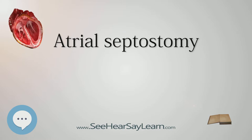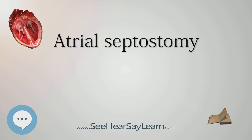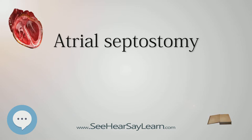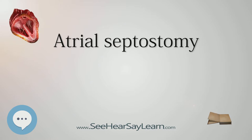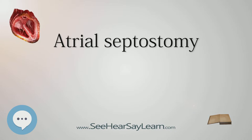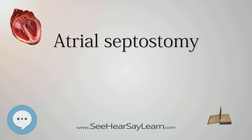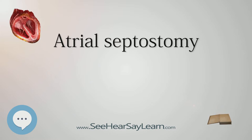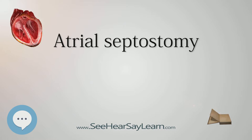The majority of atrial septostomies are performed on infants with DTGA or other cyanotic heart defects. A balloon catheter is guided through a large vein into the right atrium during cardiac catheterization. The catheter is threaded into the foramen ovale, a naturally existing hole between the atria that normally closes shortly after birth. The balloon is inflated to enlarge the foramen ovale enough that it will no longer become sealed, allowing more oxygenated blood to enter the right heart and be pumped to the rest of the body. The balloon is then deflated and the catheter is removed.